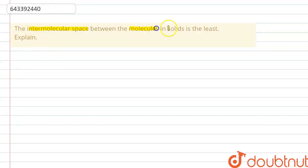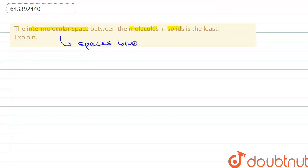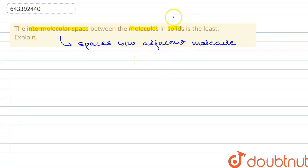Hello everyone. The question is: the intermolecular space between molecules in a solid is least — explain. So what are intermolecular spaces? These are the spaces that are present between adjacent molecules. Now we know that all states of matter are made up of molecules, and intermolecular spaces are the spaces between adjacent molecules.